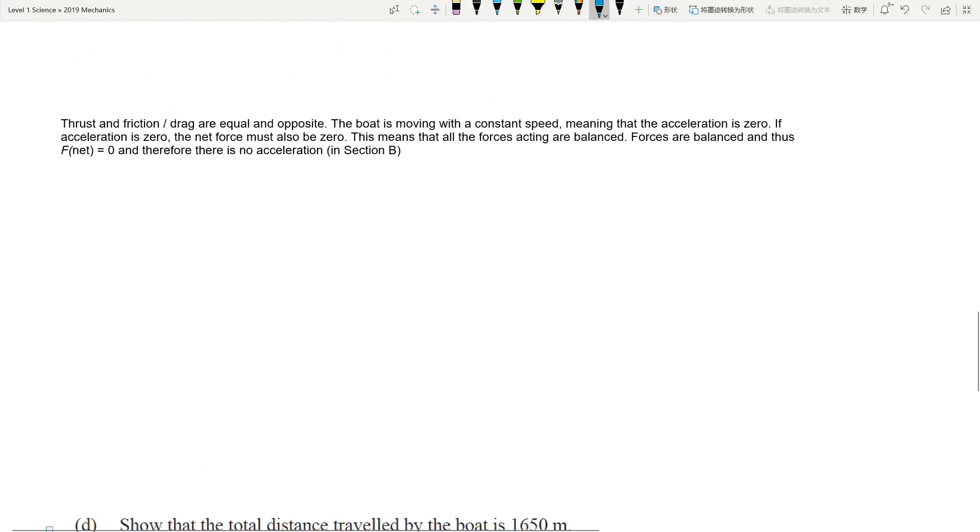So if you look at the answers here, thrust and friction or drag are equal and opposite because it's going at a constant speed, means there's no acceleration, that means the net force must be zero, that means the forces are balanced, and net force equals zero therefore there's no acceleration. This is a very typical excellence question, so you're linking multiple ideas together. You are linking the speed-time diagram, the force diagram, the forces acting on the object, and then the idea of how net force contributes to the motion.